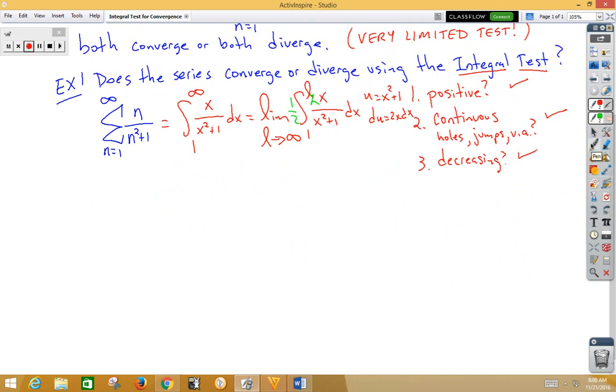So now we can go ahead and do our u sub over here. We've got 1 half integral 1 over u du, which is of course natural log. So we have 1 half natural log absolute value x squared plus 1 from 1 to L.